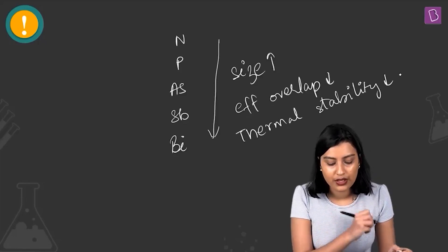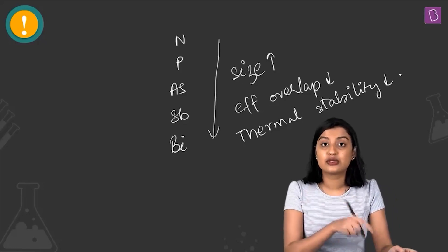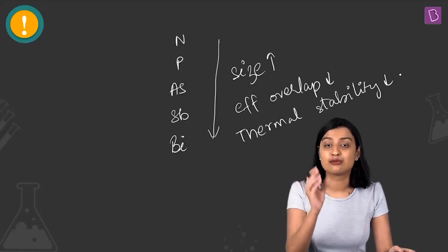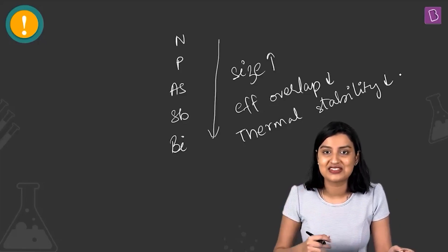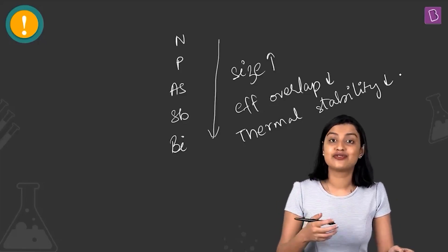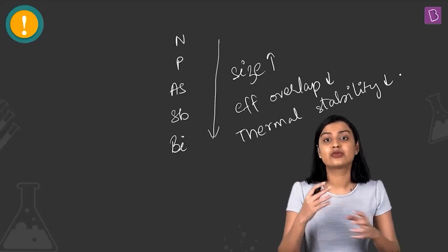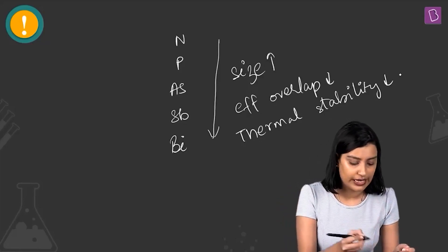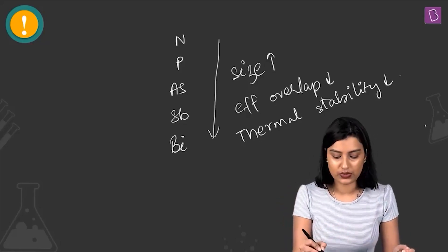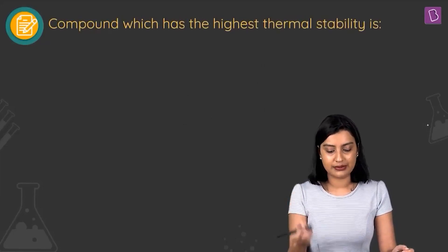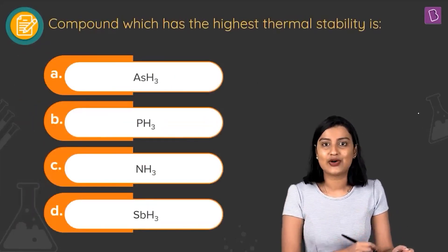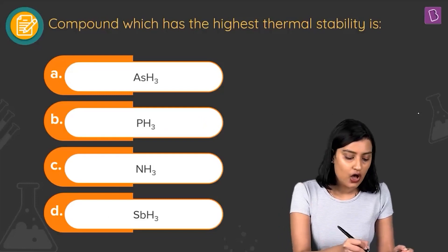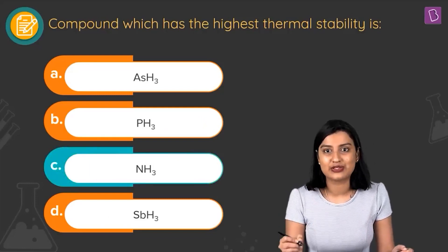Because of decreasing effective overlap, thermal stability decreases as we go down the group. The most stable hydride will be the one with the smallest central atom — nitrogen. Therefore, NH3 (ammonia) has the highest thermal stability, making option C the correct answer.